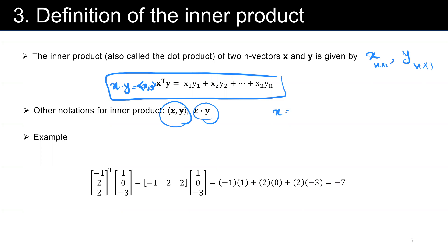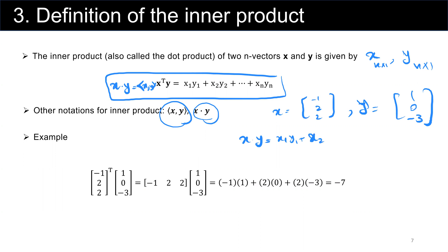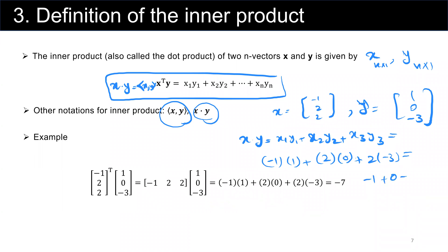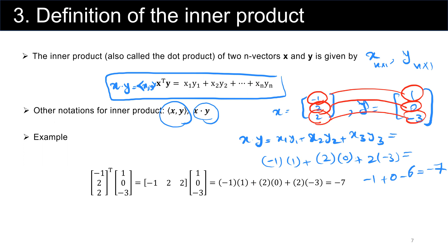Example: let vector x = [-1, 2, 2] and vector y = [1, 0, -3]. The inner product of x and y is x₁y₁ + x₂y₂ + x₃y₃, which equals (-1)(1) + (2)(0) + (2)(-3) = -1 + 0 - 6 = -7. This element-wise multiplication and summation is the definition of inner product, represented as x·y or with angle-bracket notation.